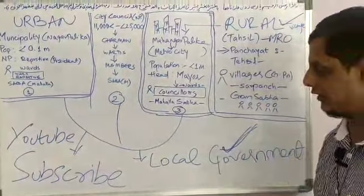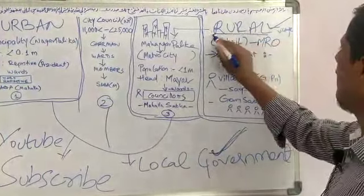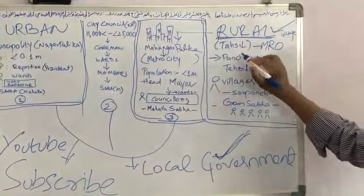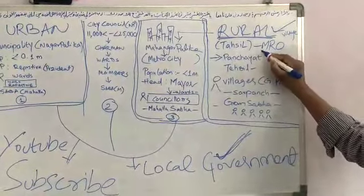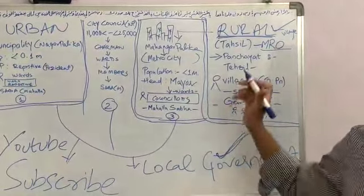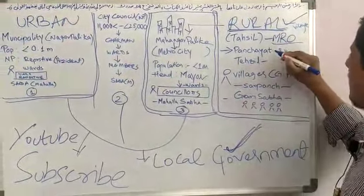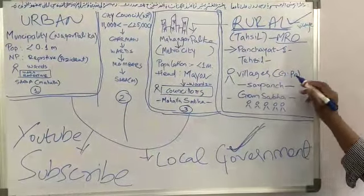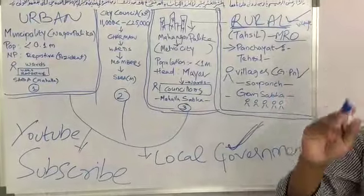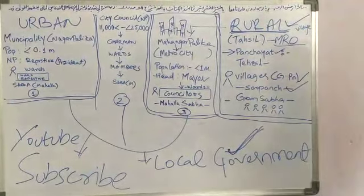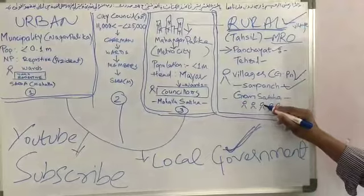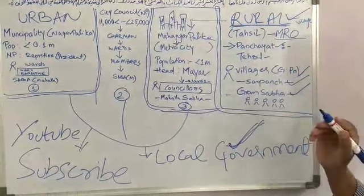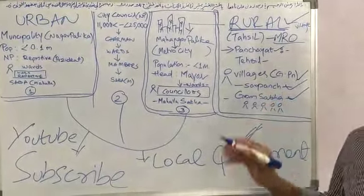It is about local government. We will come to rural — rural means village. The rural area will consist of Tehsildars, in other words MRO, Mandal Revenue Officer. And they have Panchayat. The Gram Panchayat head is Sarpanch. Under Sarpanch, the Gram Panchayat has a Gram Sabha, where there are Gram Sabha members.